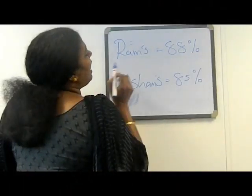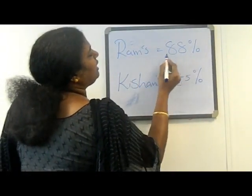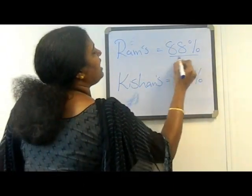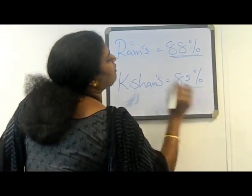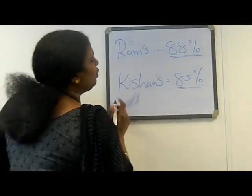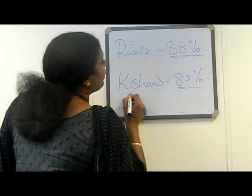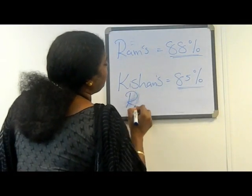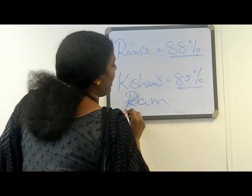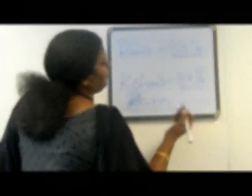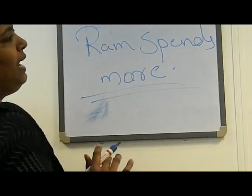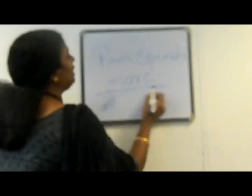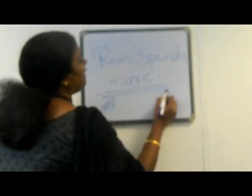Now we have Ram's expenditure to his income as 88% and Kishan's expenditure to his income as 85%. That means who spends more? Ram spends more — this is our answer. Like this, we are converting expenditure to income in percentage to compare them.